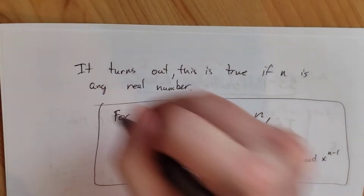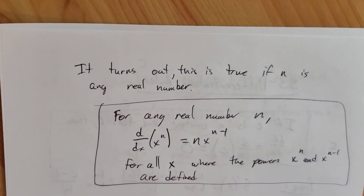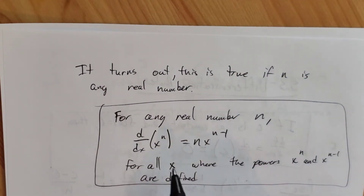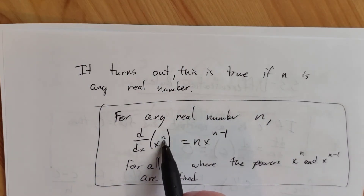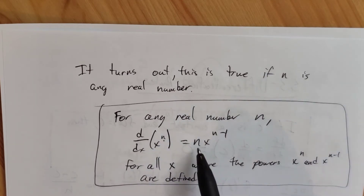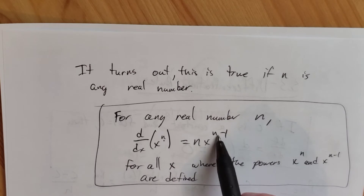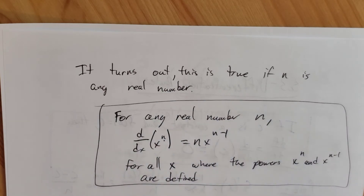Here is our power rule: the derivative of x to the n is just n times x to the n minus 1. What we do is bring down the constant in the exponent, multiply everything by that, and then reduce the exponent by minus 1. That's it.